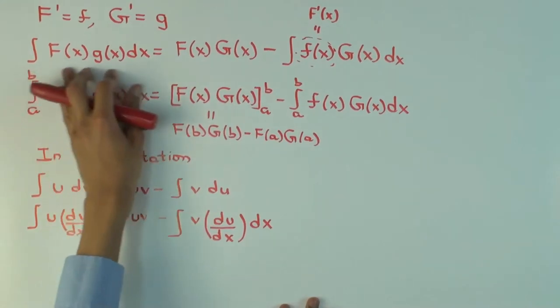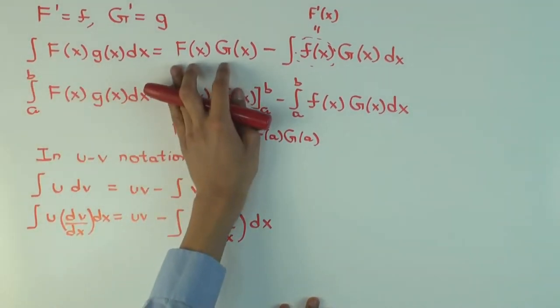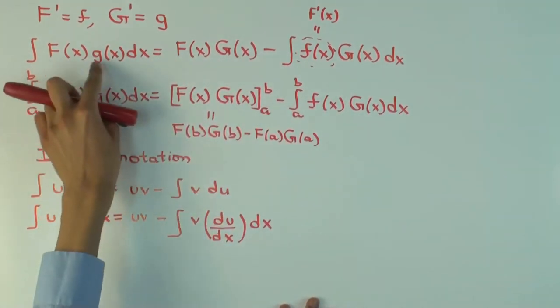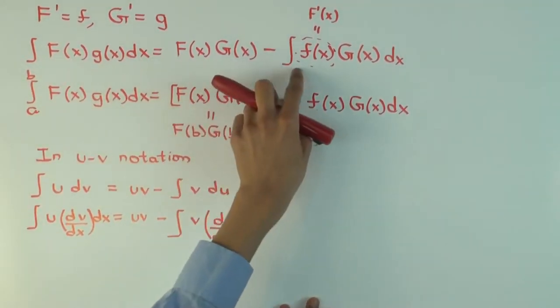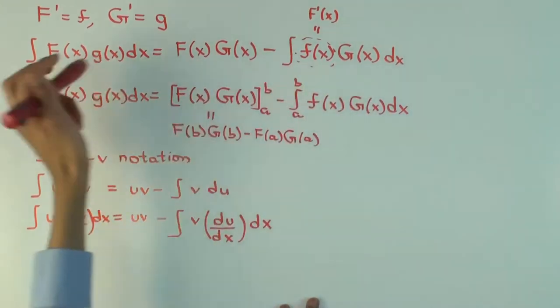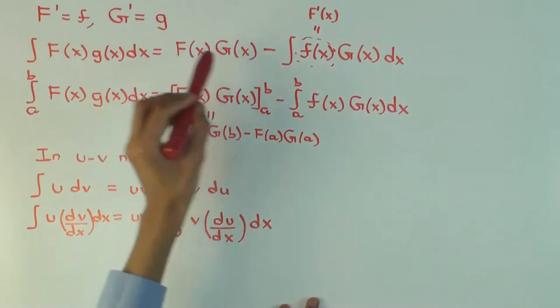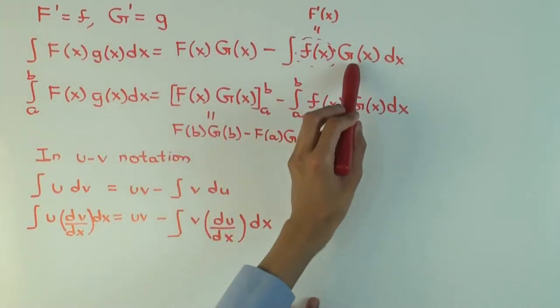Then this integral here is equal to the product of the capital functions, that's this function times the antiderivative of this thing, minus a new integral where this piece has been differentiated, right? And this piece, I'm using the integral.